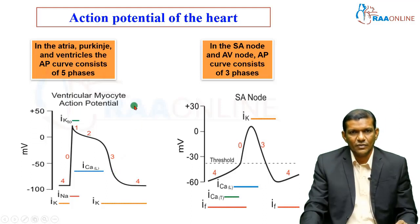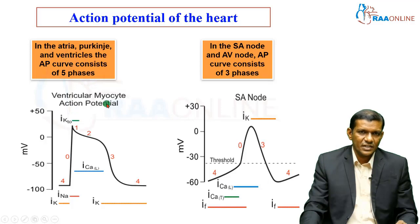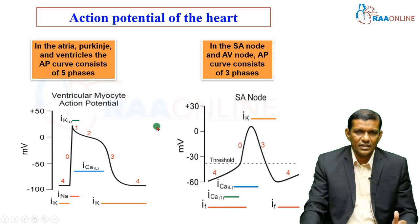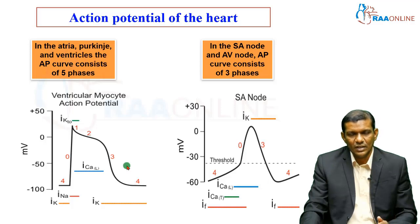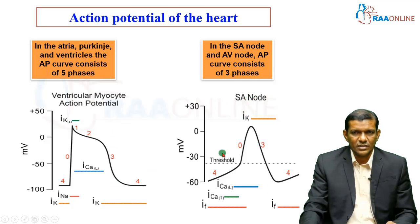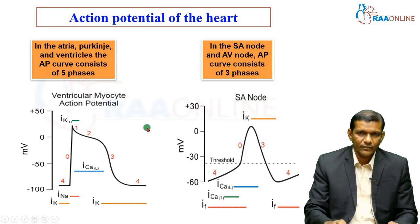The action potential differs for the ventricular myocyte versus the pacemaker cell (SA node). For the ventricular myocyte action potential, there are five phases: Phase 0, 1, 2, 3, and 4. Different ionic movements occur in each phase, producing a single heartbeat. After Phase 4, the next heartbeat begins. We will see the ventricular myocyte action potential in detail first, then the SA node action potential.